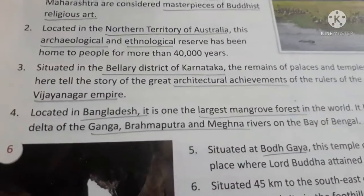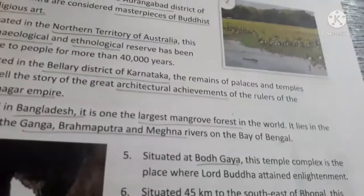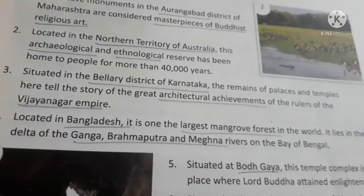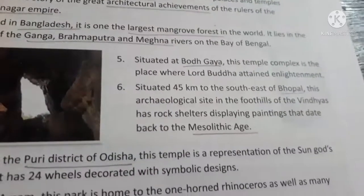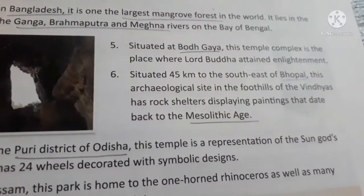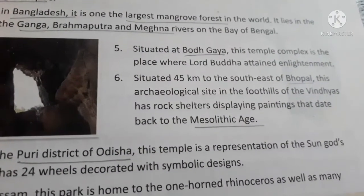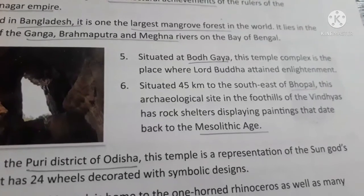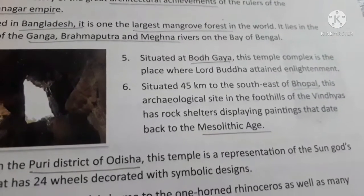Located in Bangladesh, this is one of the largest mangrove forests in the world. It lies in the delta of the Ganga, Brahmaputra, and Meghna rivers at the Bay of Bengal. Situated at Bodh Gaya, this temple complex is the place where Lord Buddha attained enlightenment.